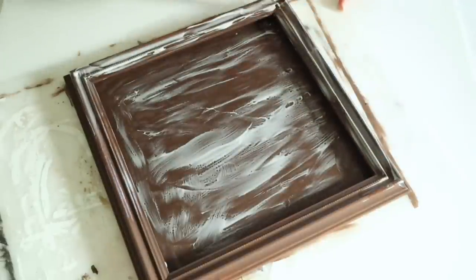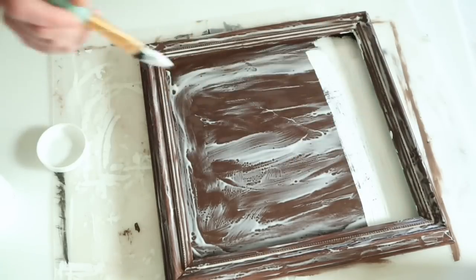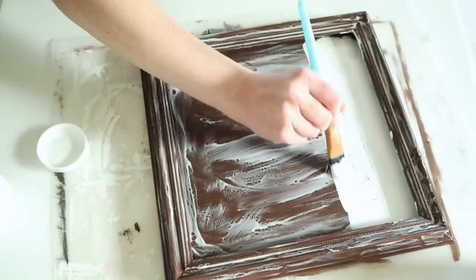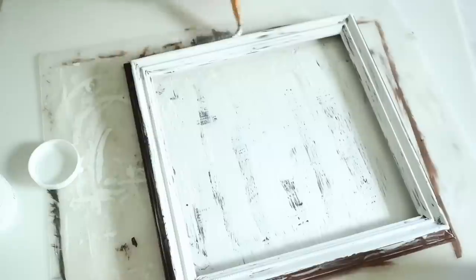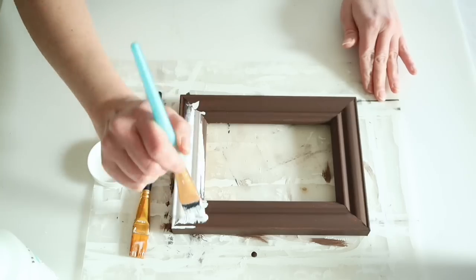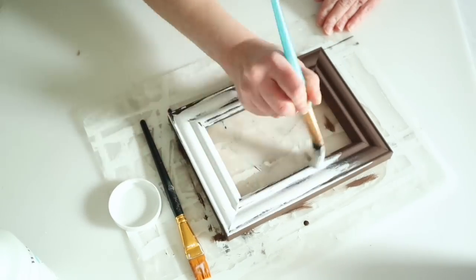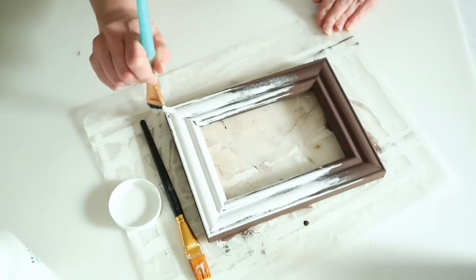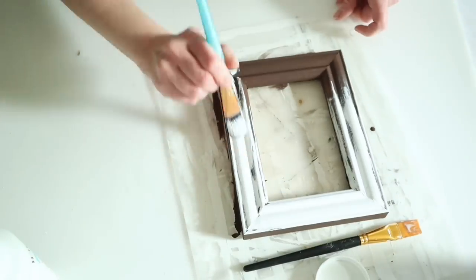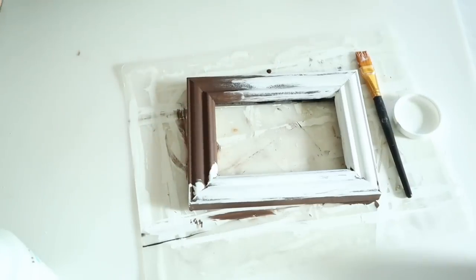The more glue you have, the more crackle you're going to get. I let that dry for a few minutes and then I'm going back in with some white chalk paint and painting this entire thing. I decided not to do the crackle effect on the smaller frame. I'm just dry brushing my white chalk paint over top and letting some of that brown peek through.